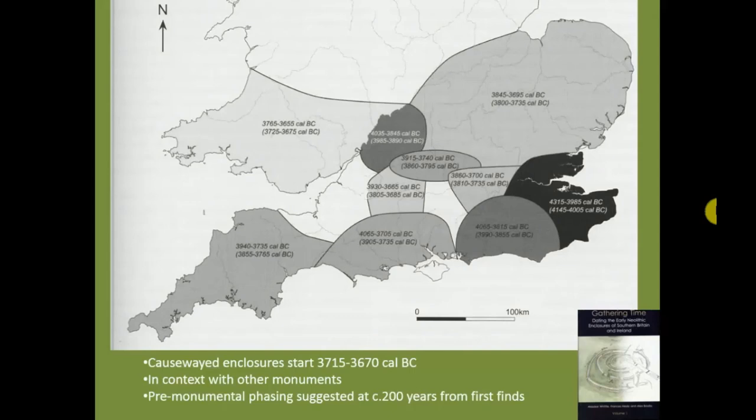You'll be familiar with this — where Gathering Time produced a map showing where they think the causewayed enclosure, which marks the start of the Neolithic, is coming in at different dates across southern Britain. We're getting that sense of regionality that we don't perhaps get as much with the summed probability analyses, until those are very constrained.